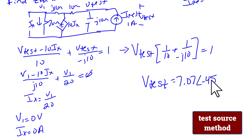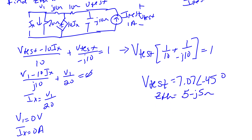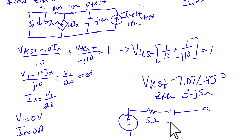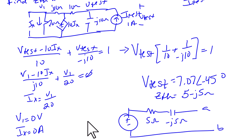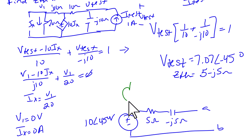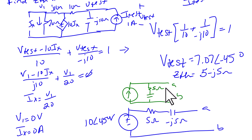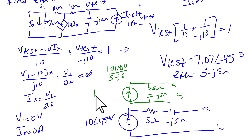So Z Thevenin equals V_test in rectangular form = 5 minus J5 ohms. The Thevenin equivalent is a voltage source of 10 angle 45 degrees in series with 5 minus J5 ohms. We can find the Norton equivalent by source transformation: the impedance is still 5 minus J5 ohms, and the Norton current is 10 angle 45 degrees divided by 5 minus J5, which equals 1.414 angle negative 90 degrees.